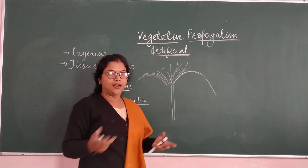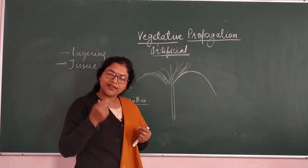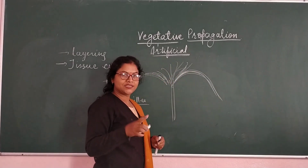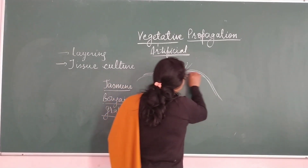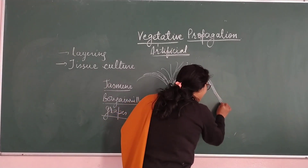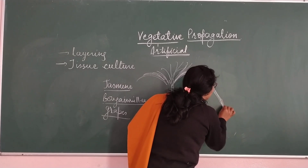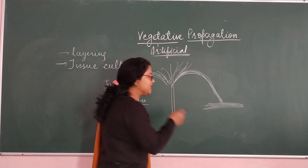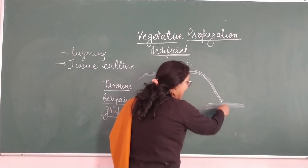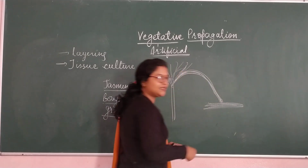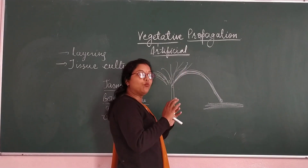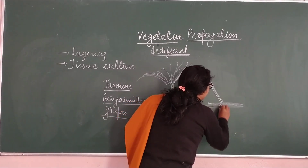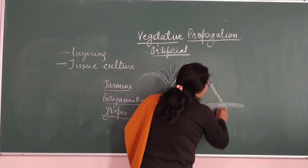Because the stems are soft, they start bending. So what farmers or gardeners do is they take this part of the plant, push it inside the soil, and cover it with moist mud or moist soil. Slowly, adventitious roots start developing from this part.